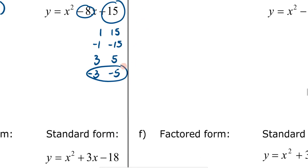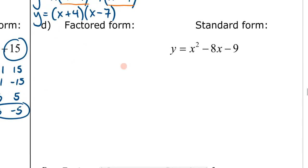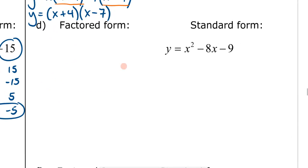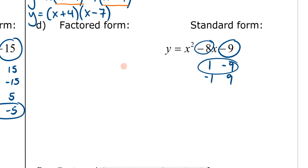Which pair adds to give negative 8? It turns out negative 3 and negative 5 are those numbers. So the factored form is y equals x minus 3 times x minus 5. For the next example, factors of negative 9 are 1 and negative 9, or negative 1 and positive 9. Adding 1 and negative 9 gives negative 8, so the factored form is y equals x plus 1 times x minus 9.